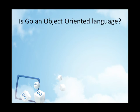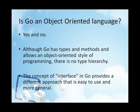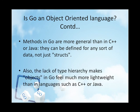Is Go object-oriented or not? Go has types and methods and allows an object-oriented style of programming, but there is no type hierarchy. The concept of interface in Go provides a different approach that is easy to use and in some ways more general. There are also ways to embed types in other types to provide something analogous, but not identical, to subclassing. Moreover, methods in Go are more general than in C++ or Java. They can be defined for any sort of data, not just structs. Also, the lack of type hierarchy makes objects in Go feel much more lightweight than in languages such as C++ or Java.